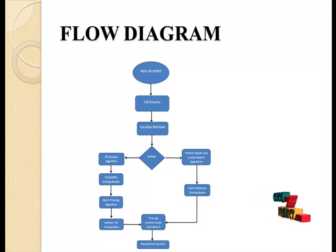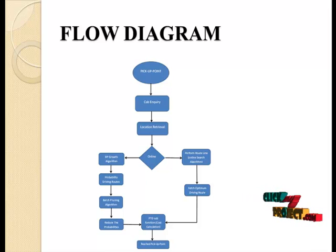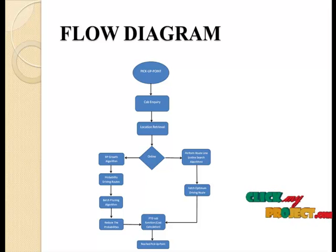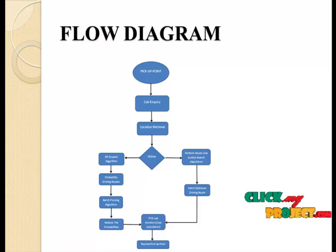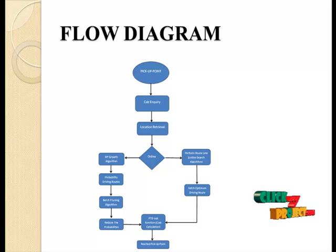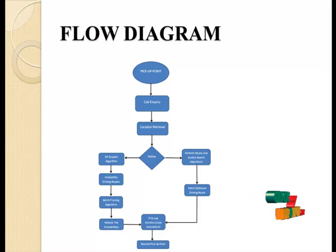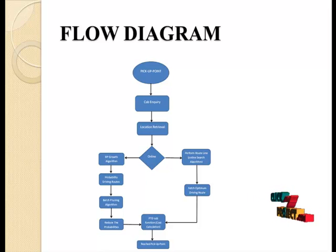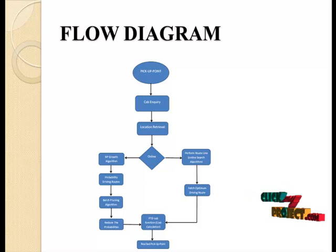If the taxi driver is online, it performs the online search algorithm, fetches the optimum driving route, and computes PTD sub-functions for cost computation. Depending on the cost, it reaches the pick-up point or the destination. If the taxi driver is offline, the backward path growth algorithm is performed and probability driving routes are calculated. The batch pruning algorithm is used to reduce unwanted paths that exceed the optimum route time. Then probabilities are reduced, PTD sub-functions are performed for cost calculation, and by comparing the cost of each path, the one with the least cost is chosen as the optimum path to reach the destination.